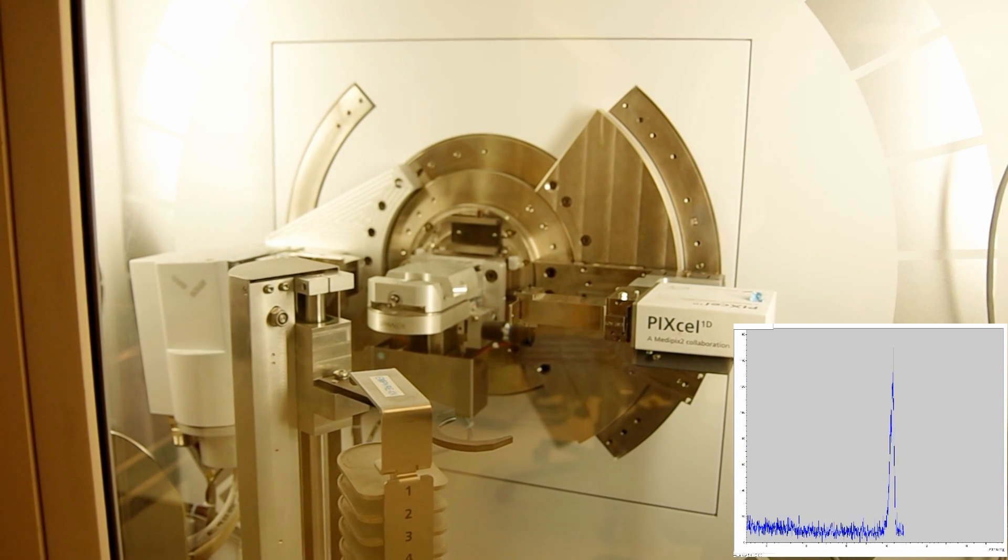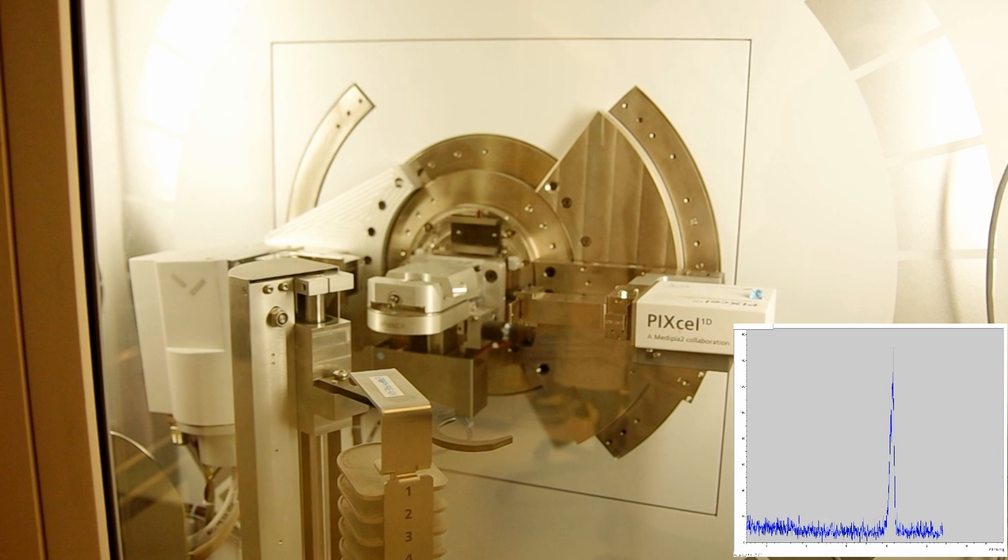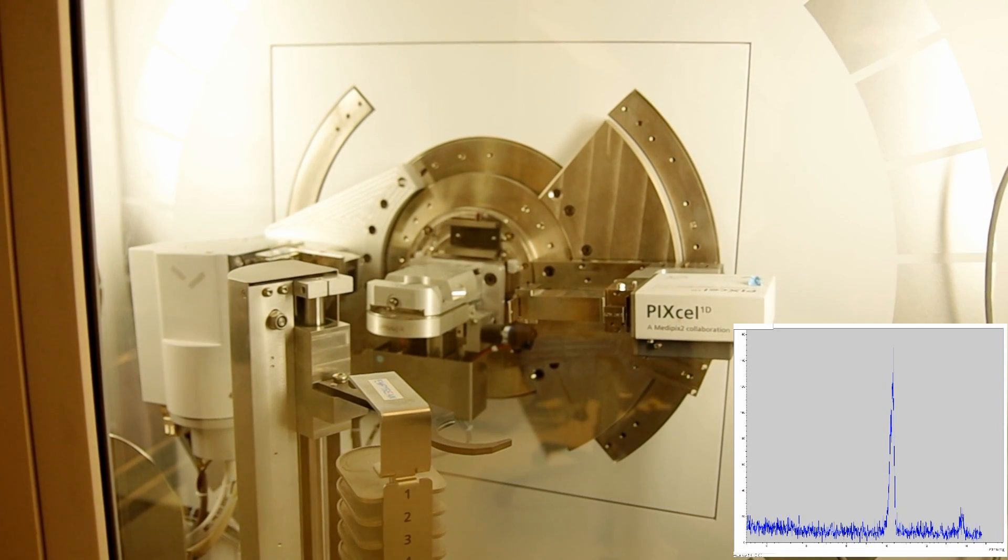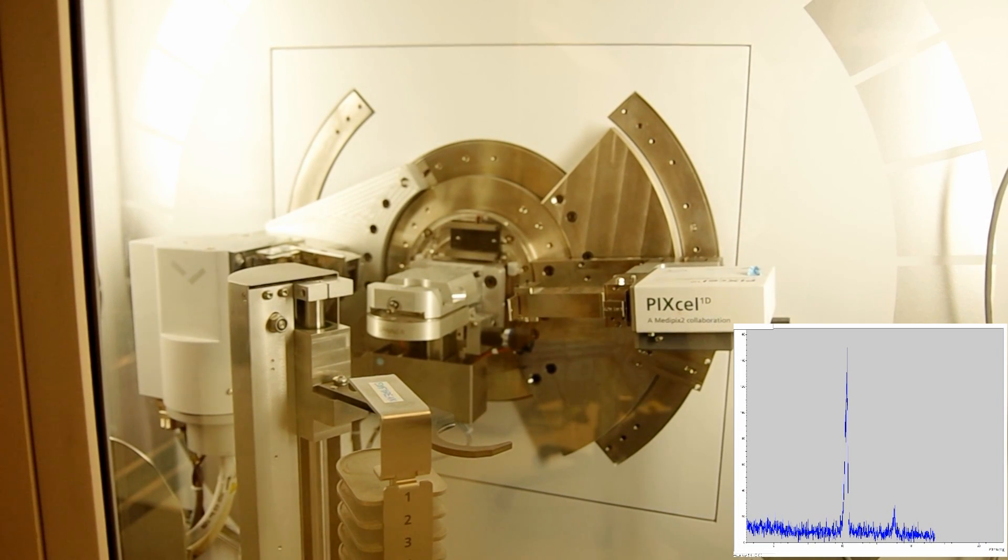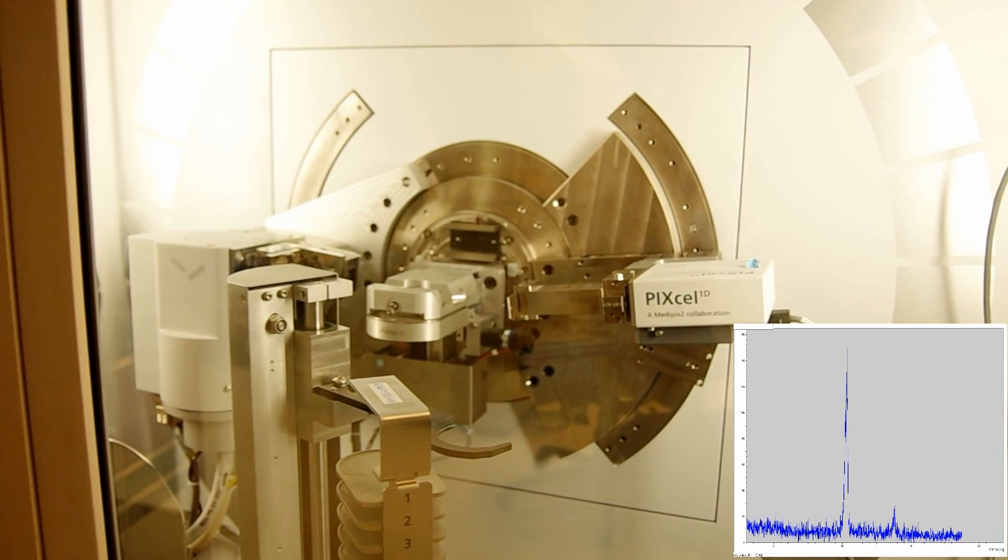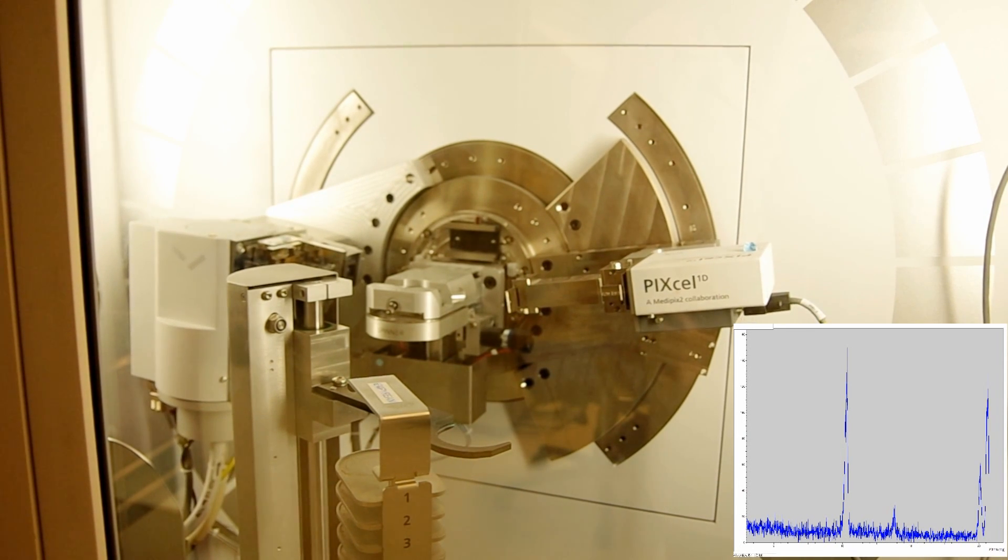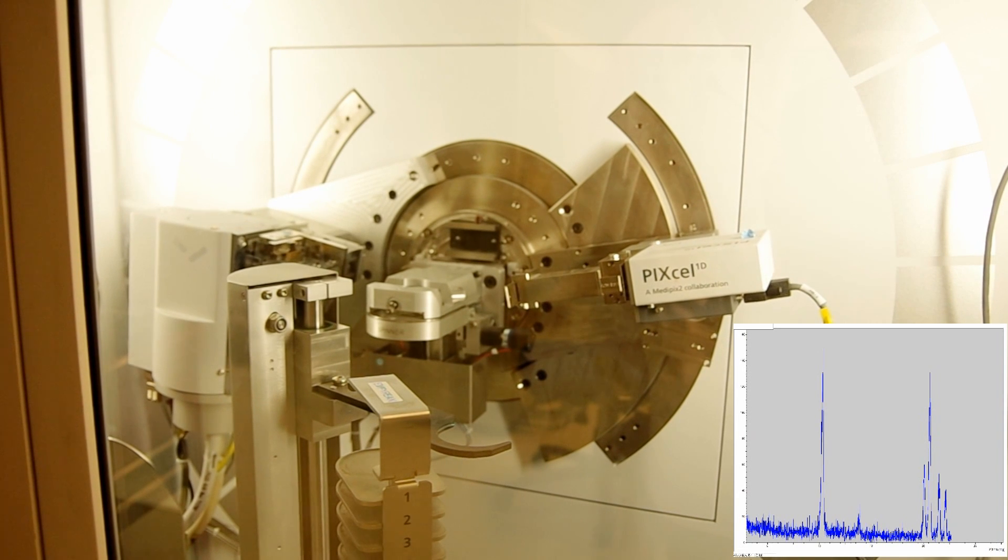Instead of changing the incident X-ray angle, the detector's angle is changed to collect the reflected X-ray at different diffracted angles. The data is being collected by the detector and the signature peaks start to show.